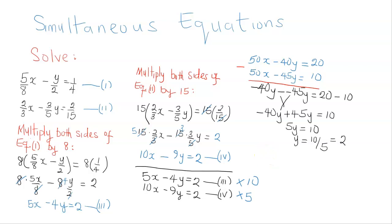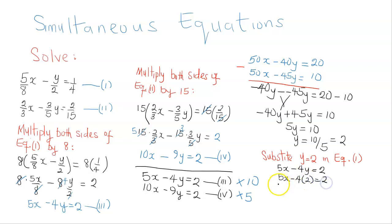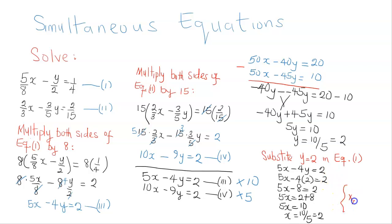Now I substitute y equals 2 into equation 3, which is 5x minus 4y equals 2. This gives 5x minus 4 times 2 equals 2, so 5x minus 8 equals 2, meaning 5x equals 10. Dividing both sides by 5, x equals 2. Therefore, the solution is x comma y equals 2 comma 2.